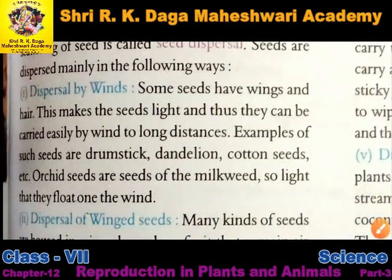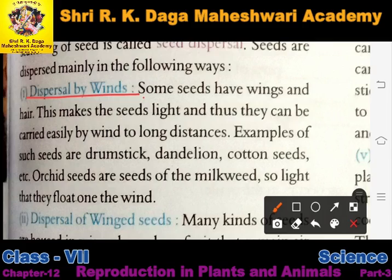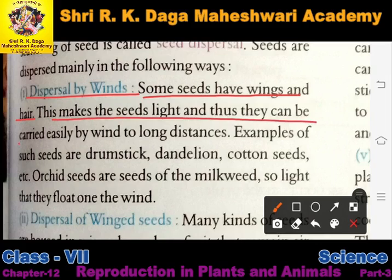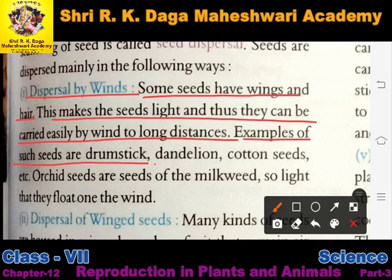First is dispersal by wind. Wind ke through jab inका dispersal hota hai to kaise hota hai — some seeds have wings and hairs. This makes the seeds light, and thus they can be carried easily by the wind to a longer distance. Inke hairs aur wings hone ke karan jo seeds hain woh halke ho jate hain aur wind unhe easily carry karke long distance tak displace kar deti hai.